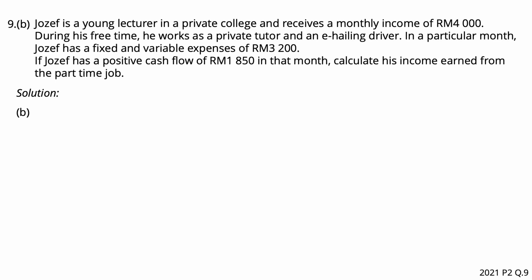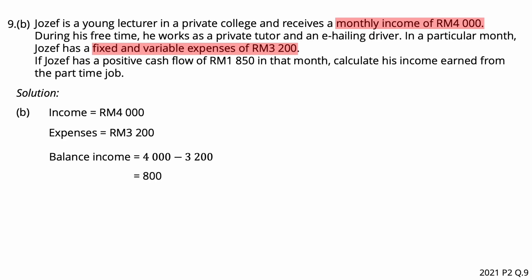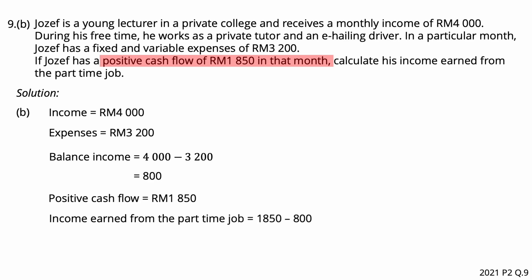Question number 9b. Please pause the video and read the question. Joseph received a monthly income of RM4,000 Malaysia. He has a fixed and variable expenses of RM3,200 Malaysia. Therefore, his balance income is RM4,000 minus RM3,200 is equal to RM800. Calculate his income earned from the part-time job in that month. If Joseph has a positive cash flow of RM1,850 Malaysia in that month, his income earned from the part-time job can be calculated by RM1,850 minus his balance income RM800, that is RM1,050 Malaysia. Joseph earned RM1,050 Malaysia from the part-time job in that month.